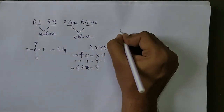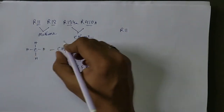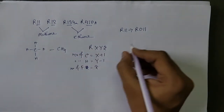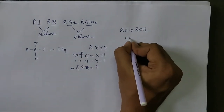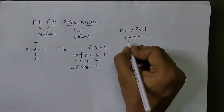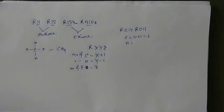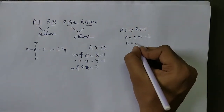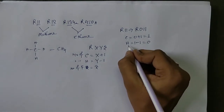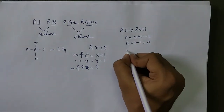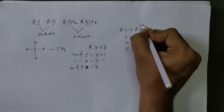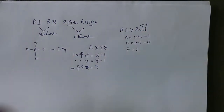Let's see how the exact structure works. We have R11, which we can write as R011. The number of carbon atoms is 0 plus 1, which equals 1. The number of hydrogen is 1 minus 1, which equals 0 — meaning there is no hydrogen atom. And the number of fluorine is 1.